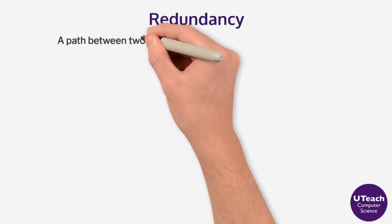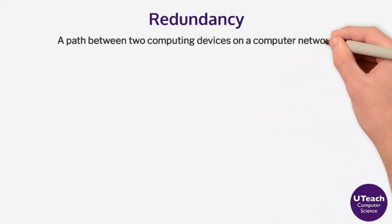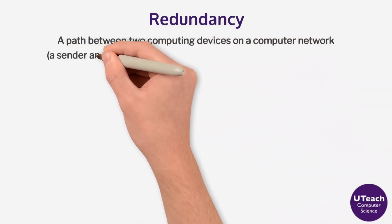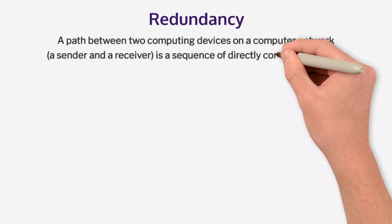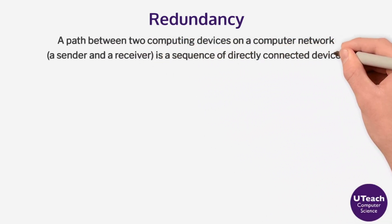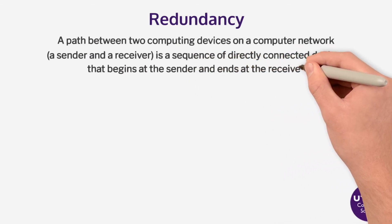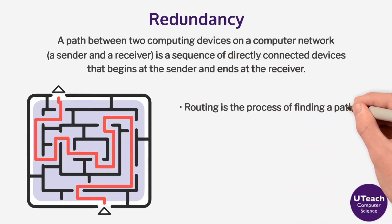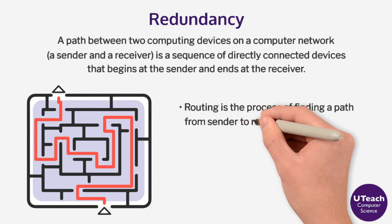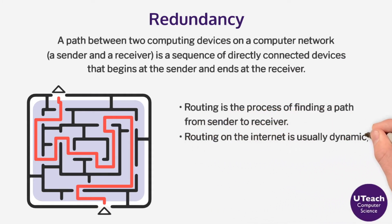A path between two computing devices on a computer network, a sender and a receiver, is a sequence of directly connected devices that begins at the sender and ends at the receiver. Routing is the process of finding a path from sender to receiver. Routing on the Internet is usually dynamic — it is not specified in advance.